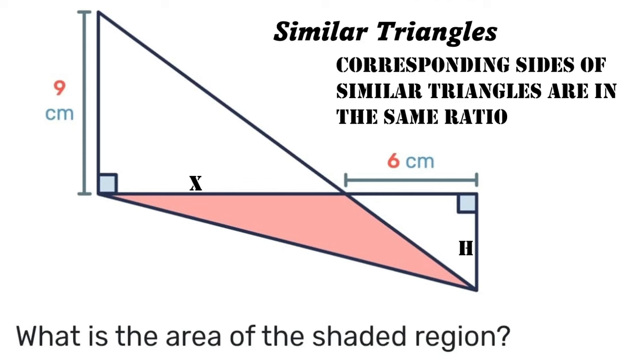...is the same ratio as the height of the large triangle to the height of the small triangle. So that's expressed in this equation: x over 6 is equal to 9 over h.